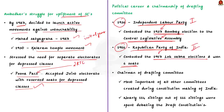Coming to the role of Ambedkar in constitution making, as you all know, Ambedkar was selected as the chairman of the drafting committee. The drafting committee was the most important of all committees created during the constitution making of India. The drafting committee members were very influential in the deliberations of the Constituent Assembly. The majority of debates in the Constituent Assembly revolved around the draft constitution prepared by the drafting committee. Out of 166 sittings of the Constituent Assembly, nearly 114 were spent debating the draft constitution, showing the importance of the drafting committee.